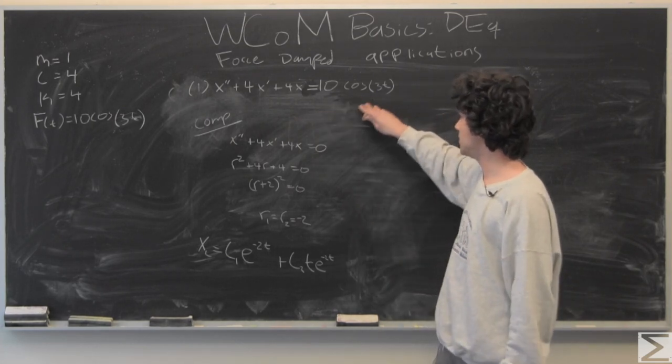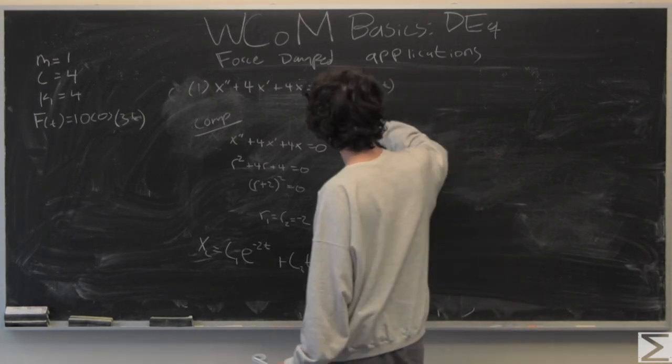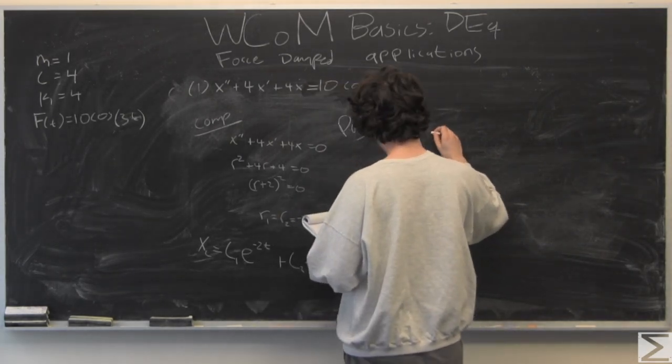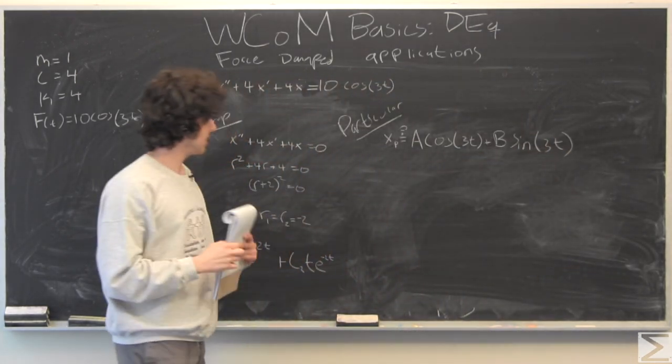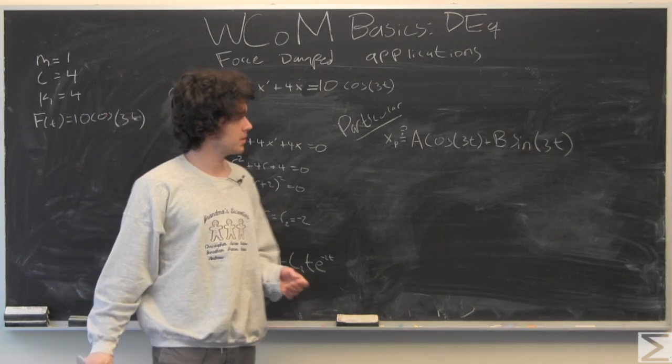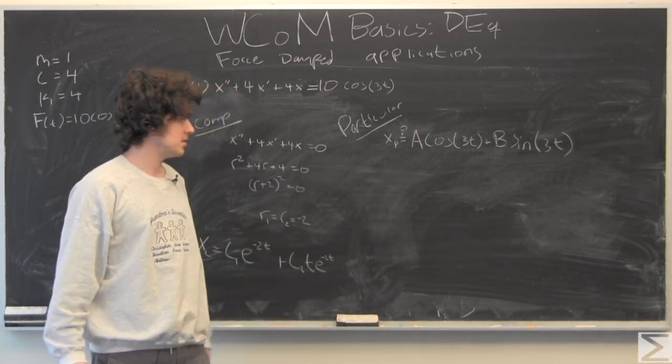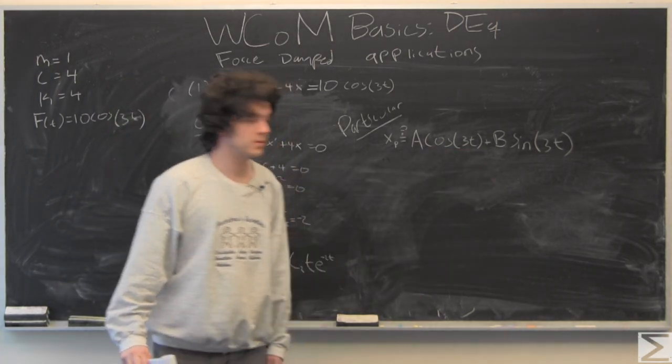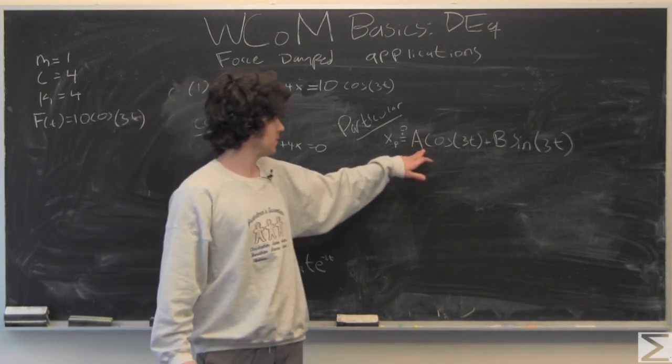You've done this before. Now let's hop into the newer part, which is finding the particular solution. Our first guess using the method of undetermined coefficients is going to be the particular equation equal to a cosine 3t plus b sine of 3t. And the whole point of undetermined coefficients is we're going to solve for a and b.